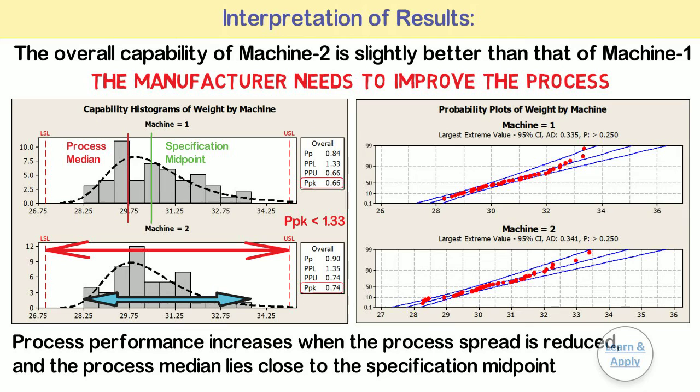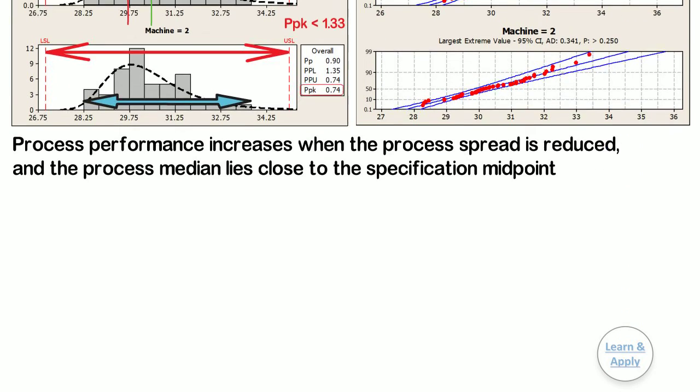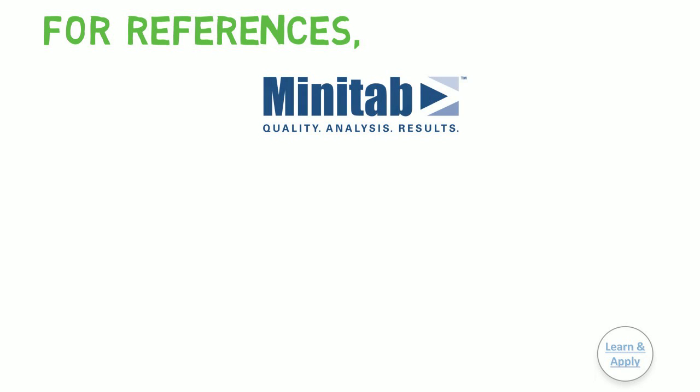This is all about non-normal process capability for multiple variables. We will see capability analysis for attribute data with practical examples in the next video. For references, I have taken some part of this detailed content from Minitab.